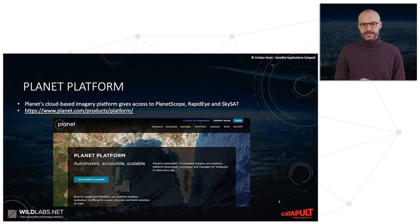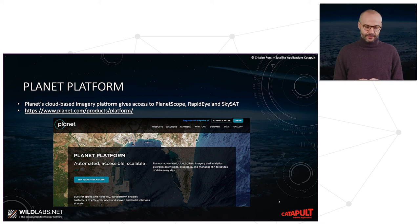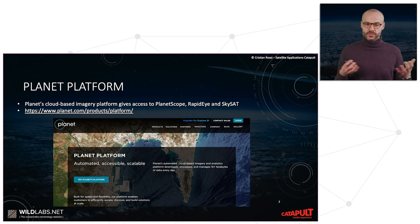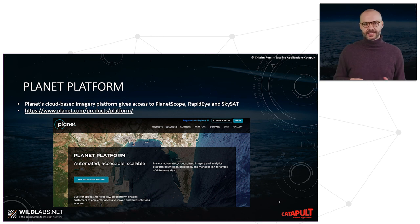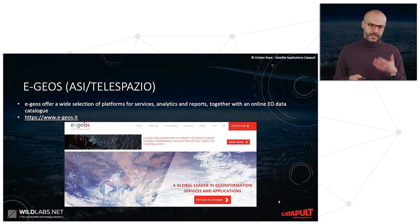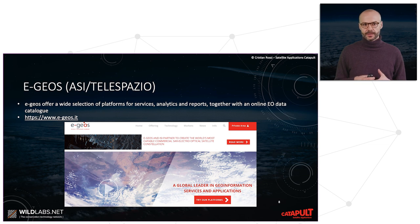Planet is another private company with a constellation of optical satellites providing daily data everywhere on Earth at around 5-meter resolution — which is quite unique. They have a platform to access their data and related products. Another provider is e-GEOS, from the Italian Space Agency and Telespazio, offering a wide selection of platforms and services.